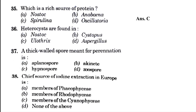Heterocysts are found in — blank: Nostoc, Cystopos, Ulothrix, or Aspergillus. The answer is option A, that is Nostoc, because heterocysts are found in blue-green algae and they help in nitrogen fixation. A thick-walled spore meant for perennation is called — blank: aplanospore, acenate, hypnospore, or zoospore. The answer is option C, that is hypnospore. Then, the chief source of iodine extraction in Europe is — blank: members of Phaeophyceae, Rhodophyceae, Cyanophyceae, or none of the above. The answer is option A, that is members of Phaeophyceae.